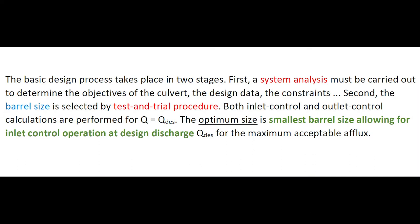The basic design process takes place in two stages. First, a system analysis must be carried out to determine the objective of the culvert, design data, and constraints. Second, the barrel size is selected by a trial-and-error procedure. Both inlet control and outlet control calculations are performed for the design discharge. The optimal size is the smallest barrel size allowing for inlet control operation at design discharge for the maximum acceptable head loss.